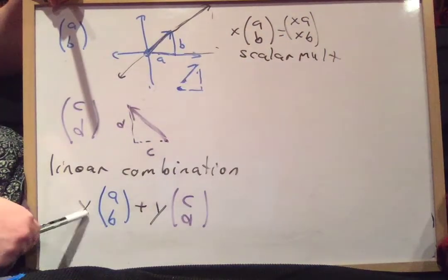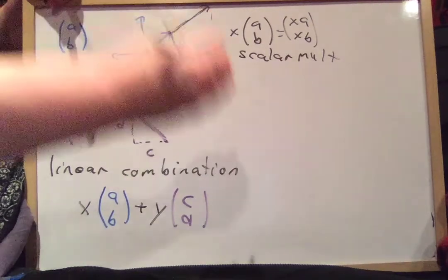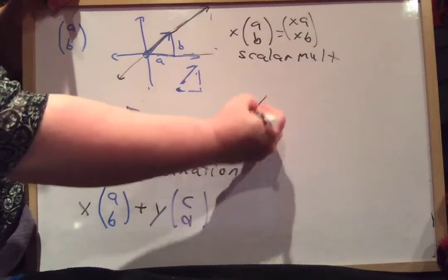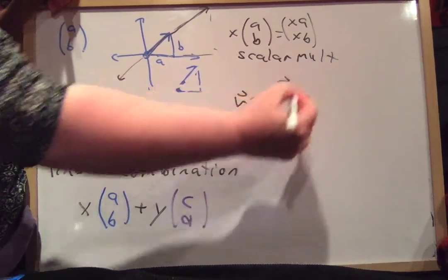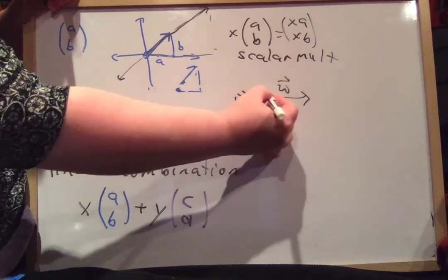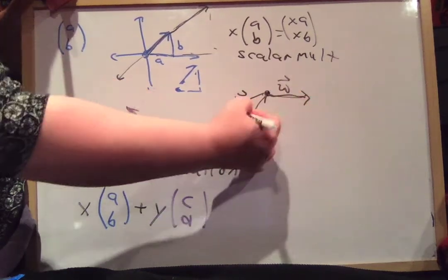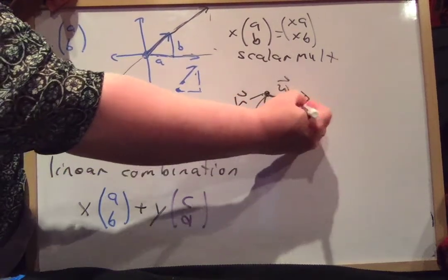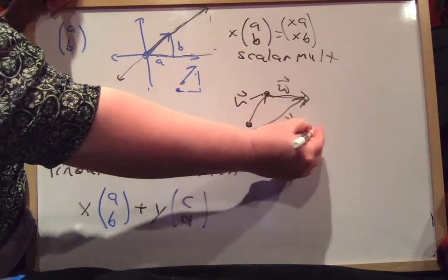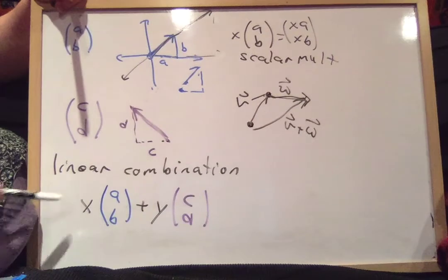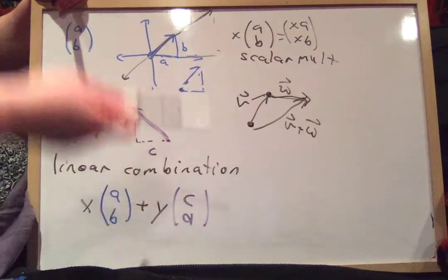And then, if you add two vectors — addition of vectors — if you have one vector v and another one w, when you add them, you take the tail from the first to the tip, and then you add the second one. The tail of w goes on the tip of v. v plus w becomes the vector that goes from the tail of the first vector to the tip of the second — v plus w.